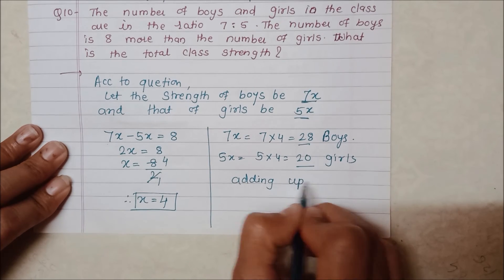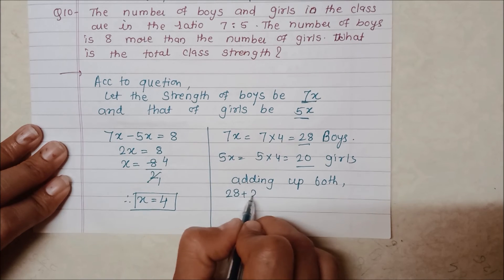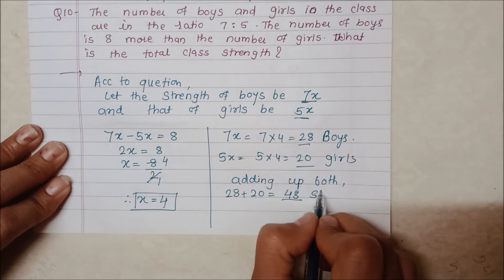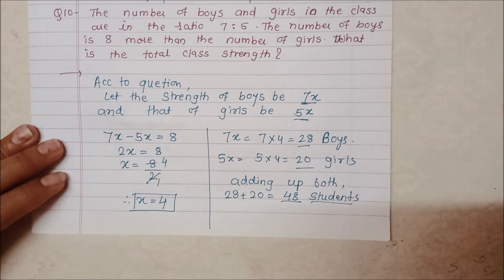Adding up both, that is 28 plus 20 is equal to 48. So 48 students are there in that class. 48 students' strength is in that class.